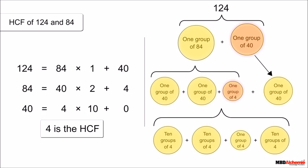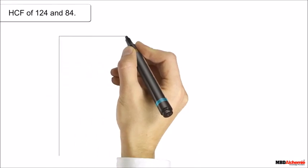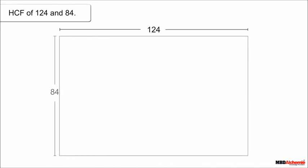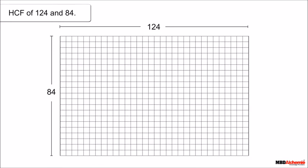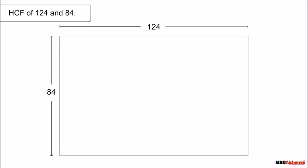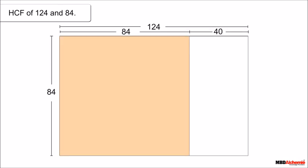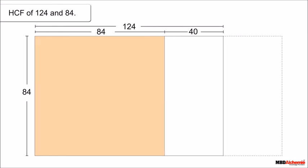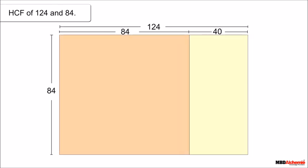Let's understand this geometrically. We have a rectangle of length 124 and breadth 84 units. We need to fill this rectangle with square tiles of maximum size, meaning a square tile whose side divides both length and breadth without leaving any remainder. The tile of maximum size that fits is 84 × 84. If we try more tiles of 84 × 84, that's not possible as less area remains — this remaining area is the remainder.